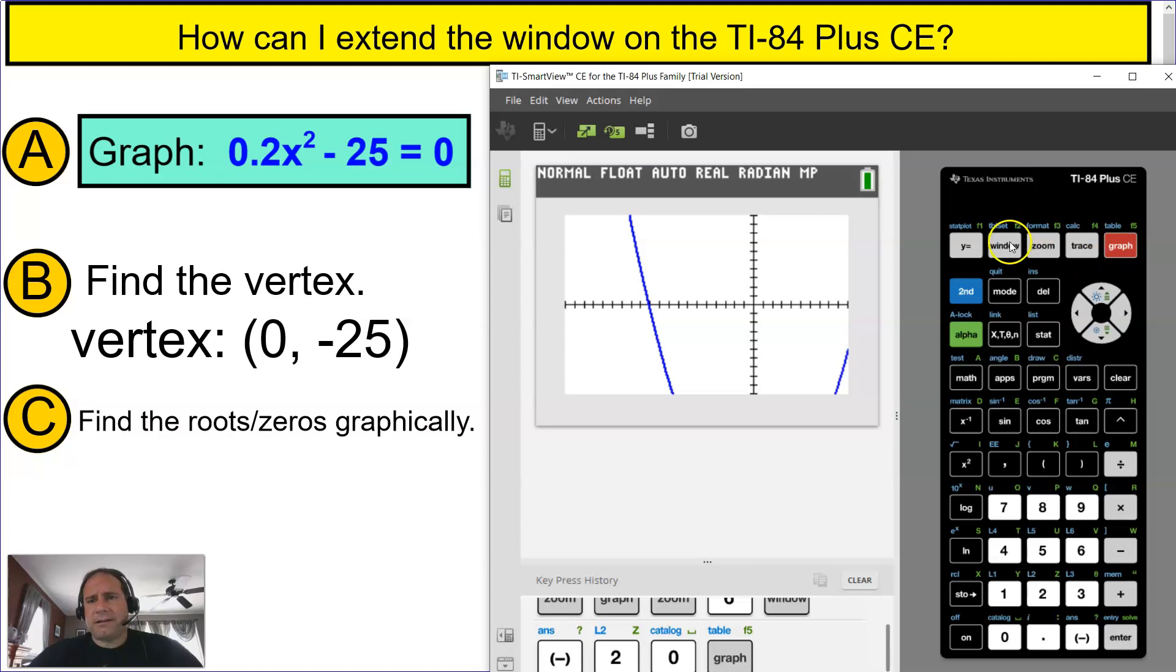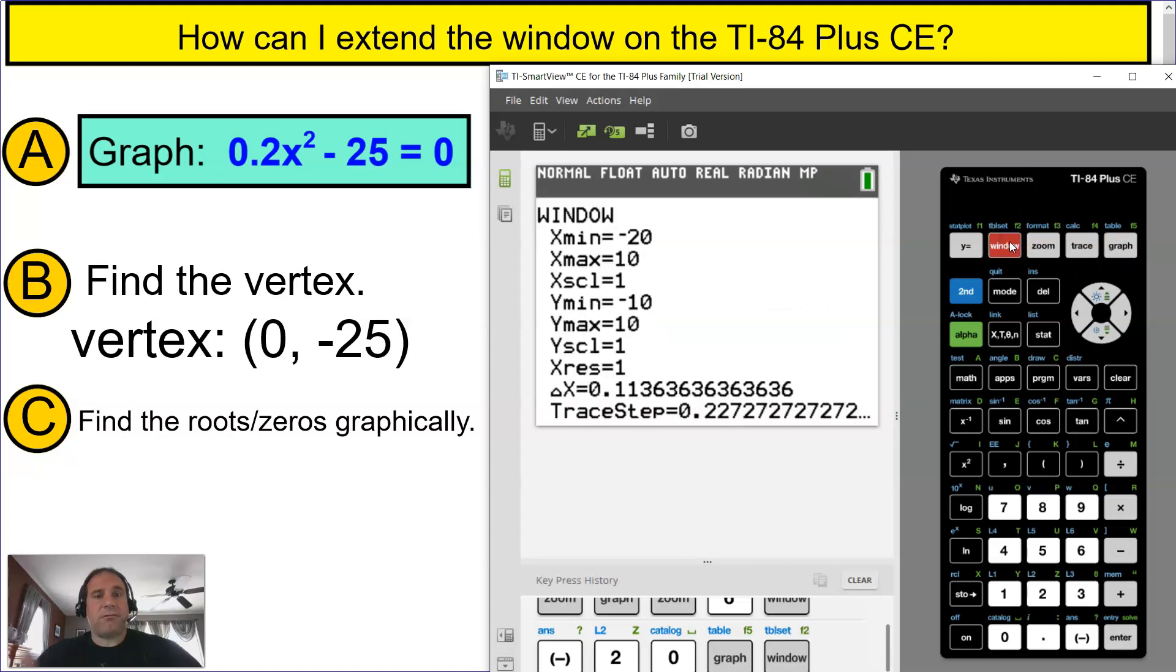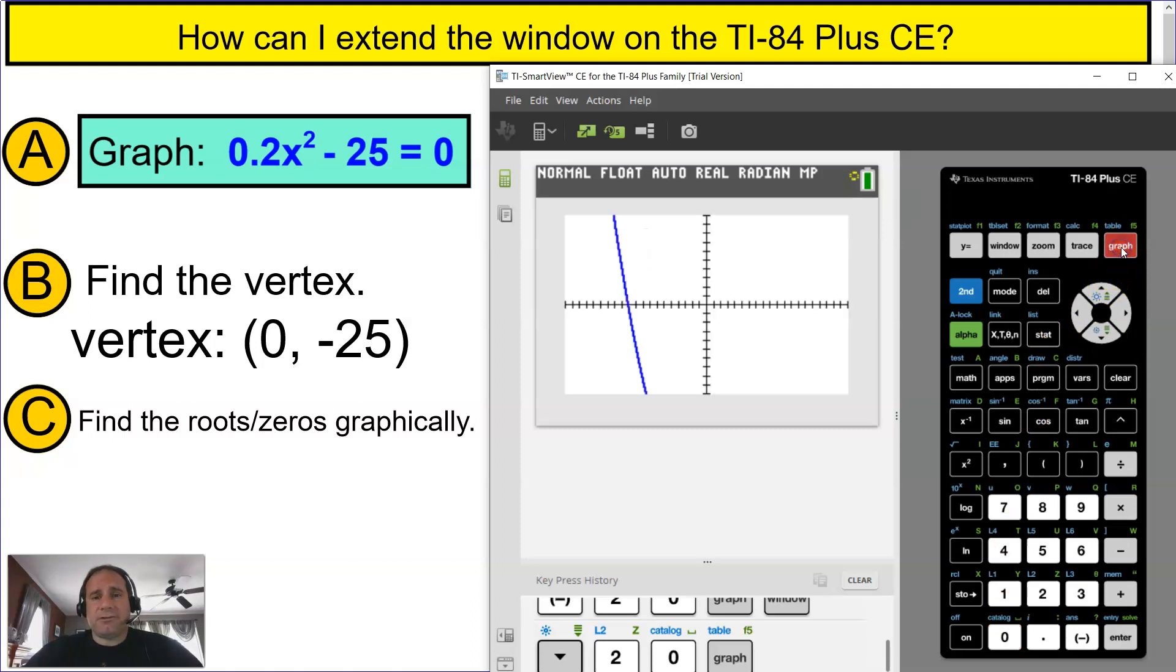And I'm going to go back to window because I want to see the right-hand side of the page, and now I want to go down and extend that to the right on the x-axis to 20. And I'm going to press graph just to see how it looks. That's good.